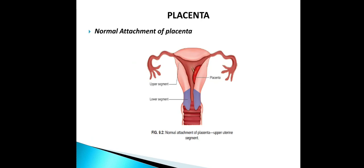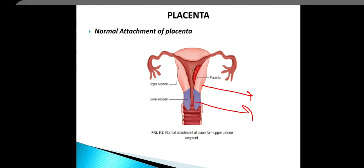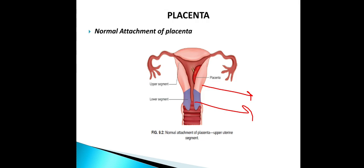Normal attachment of the placenta is in the upper uterine segment, but if it is attached in the lower uterine segment then it is called placenta previa. In this diagram, the orangish part is the upper uterine segment, and if the placenta is in the lower purplish part shown in this diagram, then it is called placenta previa.